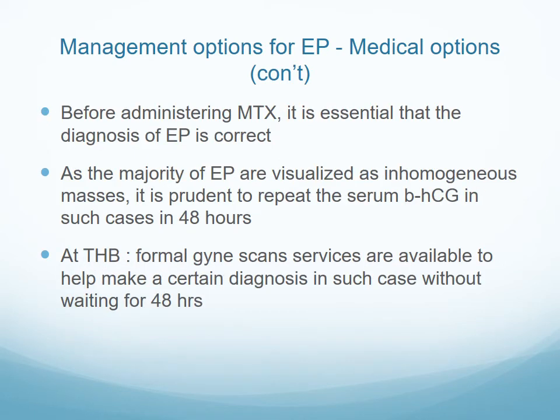Before administering methotrexate, it is essential that the diagnosis of ectopic pregnancy is correct. Most ectopics visualized on ultrasound appear as an inhomogeneous mass — not always the classic double-ring donut sign with a fetal pole. Most of the time we have an inhomogeneous mass. So the best approach is to wait and repeat the scan after 48 hours.